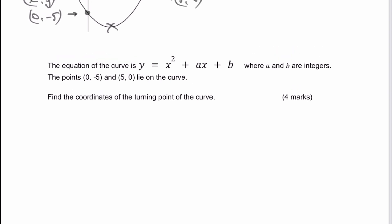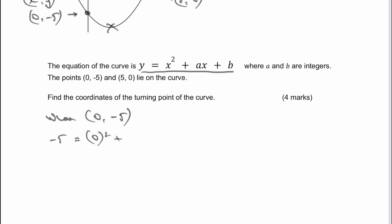The first thing I'm going to do is I'm going to say, when x equals 0, then y equals -5. That's good because I can take that and put it directly into the equation itself. What I'm going to end up with is -5 equals 0 squared plus a times 0, which is the value of x, plus b.